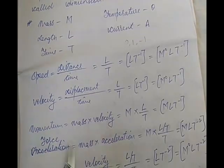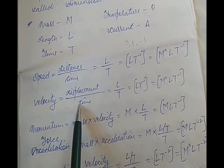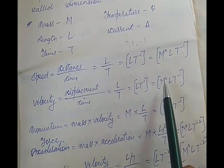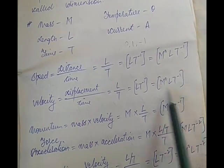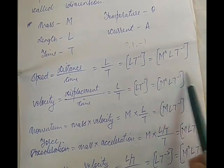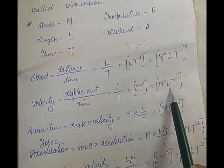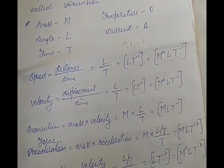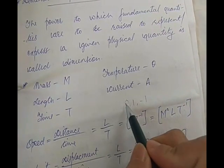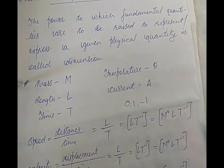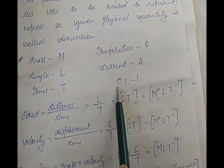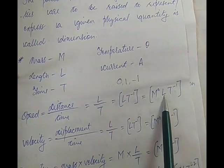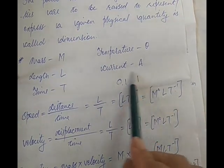Likewise, velocity is displacement upon time. Displacement is basically length, so this is also L by T, which is L T inverse. Again, we write M to the power 0, L, T inverse inside square brackets — this is the dimensional formula for velocity. We see that the dimensional formula for both speed and velocity is the same. The dimension of speed and velocity is 0, 1, minus 1 — for mass, length, and time respectively — because M is raised to power 0, L to power 1, and T to power minus 1.